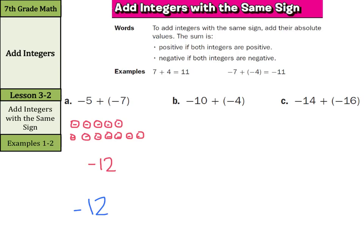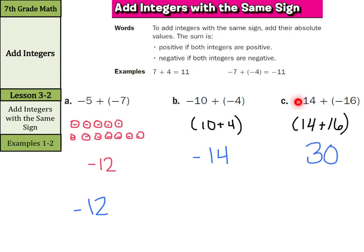What about negative 10 plus negative 4? Add in your head: 10 plus 4 is 14, and I have the same sign, so keep that negative 14. What about negative 14 plus negative 16? Once again, same sign, both are negative, and I'm adding. So 14 plus 16 is 30, and since both signs are negative, we keep it negative 30. Whether both are positive and get a positive answer, or both are negative and add to get a negative — that's what we do when we have integers with the same sign.